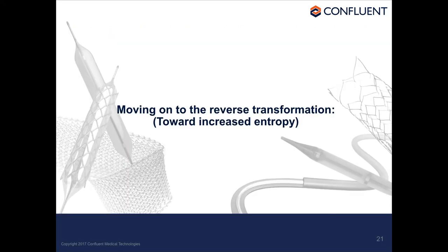That completes the forward transformation — cooling down and applying stress, going towards martensite. Now we go the other way. Having formed martensite, we'll revert it and look at the reverse phase diagram. In water the forward and reverse superimpose, but here we'll get a different phase diagram for reversion.